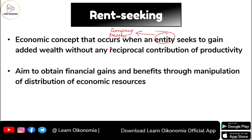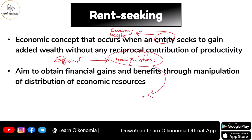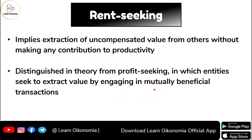There may exist an efficient level of resource distribution, but manipulations occur driven by self-interest — every person aims to obtain their own benefit. This implies a kind of extraction of something called uncompensated value, and this makes no contribution to productivity. So you are getting some value, some benefit, but you are not contributing to productivity.